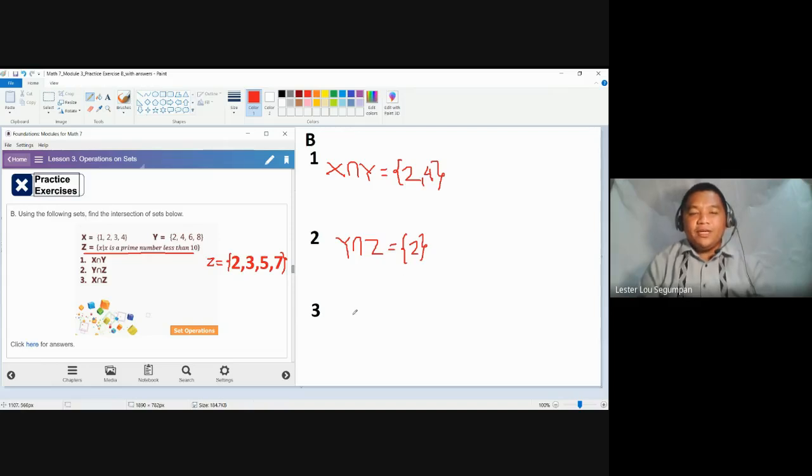For number 3, the intersection of X and Z should contain the elements found in both sets. Set X contains the first four counting numbers: 1, 2, 3, 4. Set Z contains the prime numbers less than 10. The only elements common to both sets are 2 and 3.